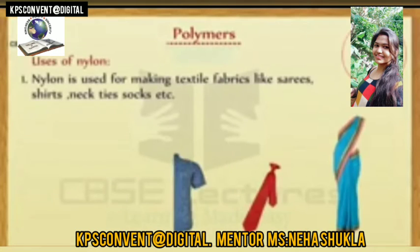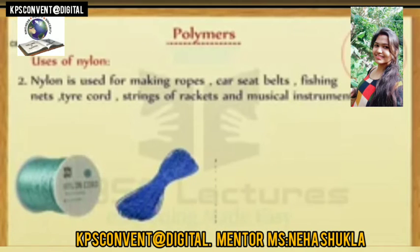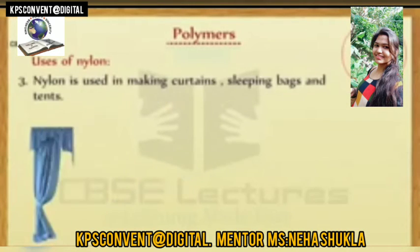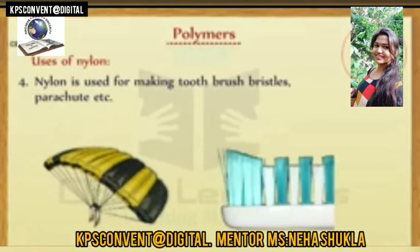Uses of nylon: nylon is used for making textile fabrics like sarees, shirts, neckties, socks, etc. Nylon is used for making ropes, car seat belts, fishing nets, tire cords, strings of rackets and musical instruments. Nylon is used in making curtains, sleeping bags, and tents. Nylon is used for making windproof muscles, parachutes, etc.